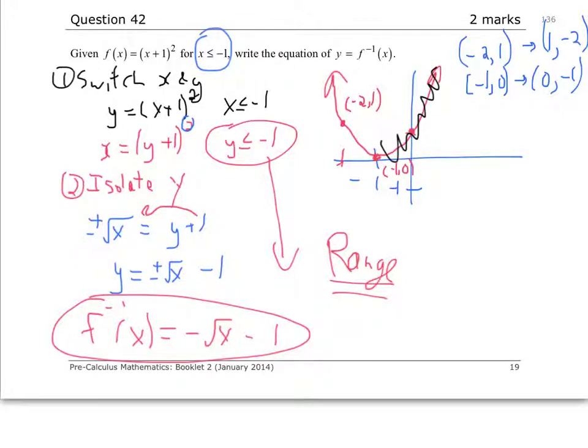So let's continue on. This is negative 1. So 0, negative 1 goes right here. And then 1, negative 2, apologize for this, would be about right here. So the inverse of that parabola would make, well, inverse of half a parabola would kind of make half a sideways parabola.